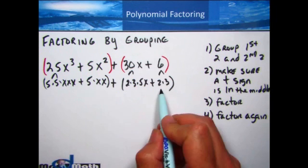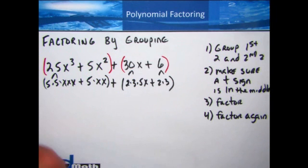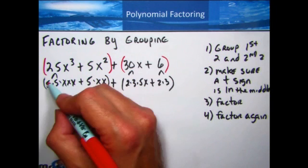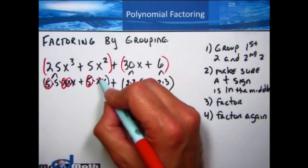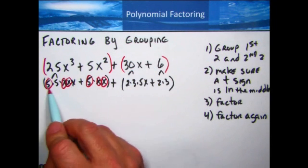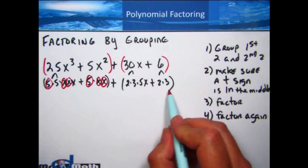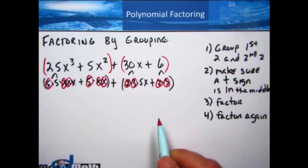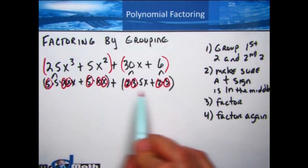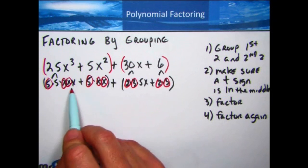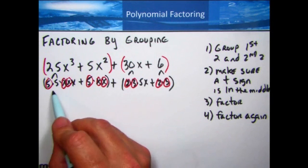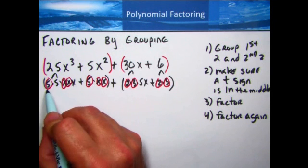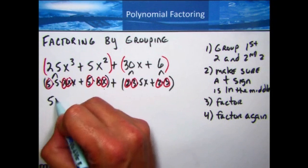Keeping the plus sign in the middle, we now look to see what each group has in common, just like we did in the last section. In the first group there is a 5 in common and also two x's. In the second group, they both have a 2 and a 3 in common. I'm factoring each set of parentheses separately, looking for the greatest common factor in each.